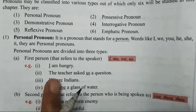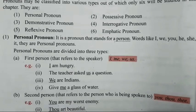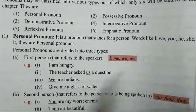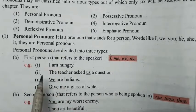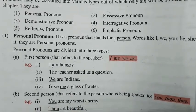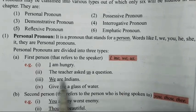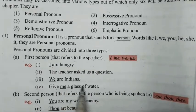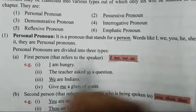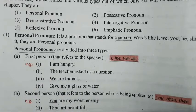Personal pronouns are divided into three groups. First person refers to the speaker — I, me, we, us. For example: 'I am hungry.' 'The teacher asked us a question.' 'We are Indians.' 'Give me a glass of water.' So in short, you all have to only remember these words for first person personal pronoun. It is divided into three types.